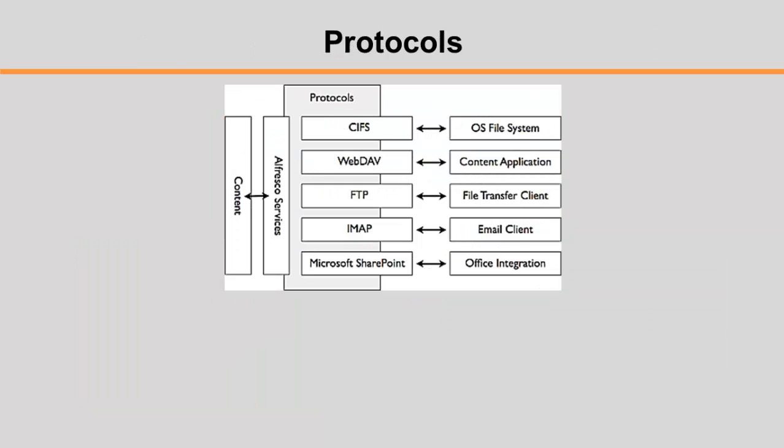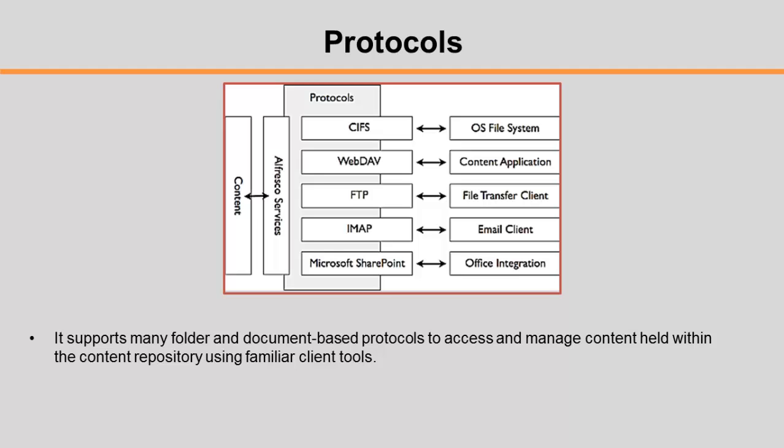The Alfresco content application server supports many folder and document based protocols to access and manage content held within the content repository using familiar client tools. All the protocol bindings expose folders and documents held in the Alfresco content repository. Most protocols also permit updates, allowing a client tool to modify the folder structure, create and update documents, and write content. Some protocols also allow interactions with capabilities such as version history, search, and tasks. Internally, the protocol bindings interact with the content repository services which encapsulate the behavior of working with files and folders, ensuring a consistent view and update approach across all client tools. An Alfresco subsystem for file servers allows configuration and lifecycle management for each of the protocols, either through property files or JMX.